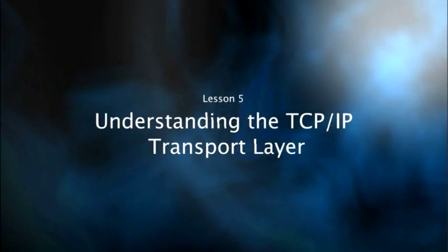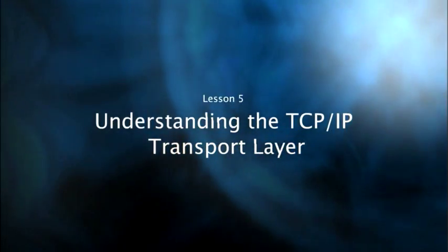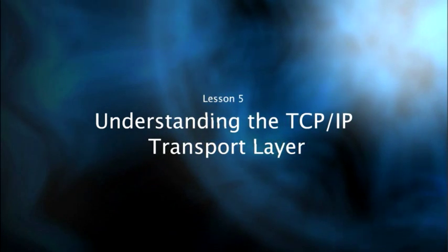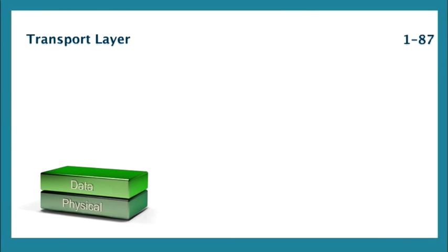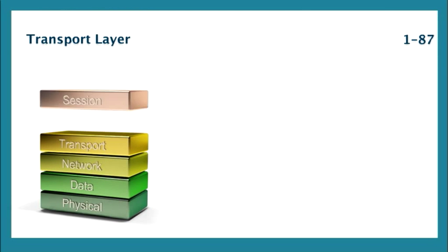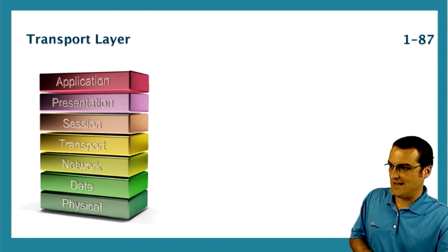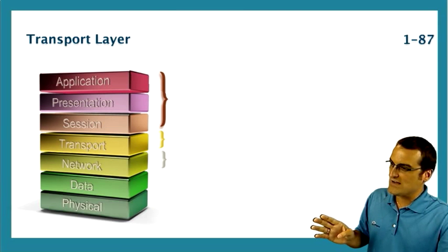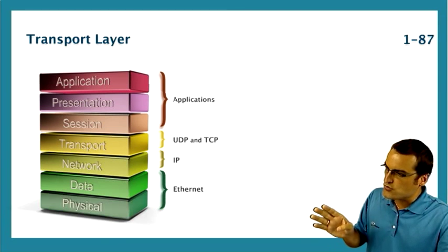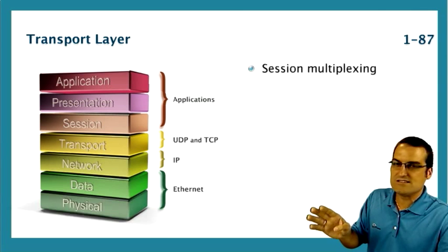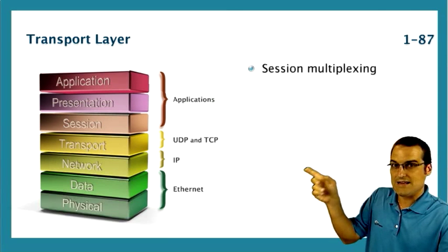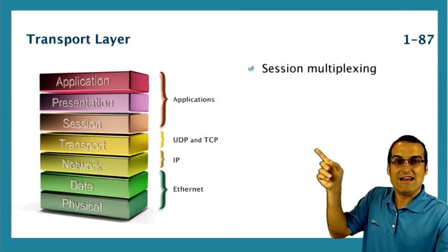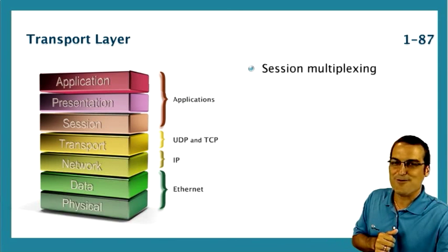It seems like I'm just fine when it comes to the physical, data link, and network layer, but the minute I hit that layer four, the minute I hit that transport layer, I start struggling on exactly what is the purpose of that layer. Well, here we can see our OSI model, and here you can see our groupings of popular things at each layer, like IP at the network layer, and UDP and TCP at the transport layer.